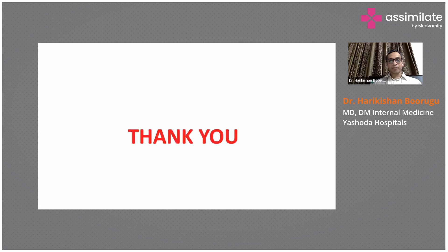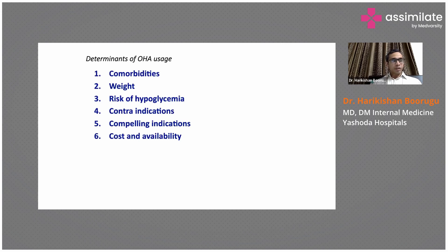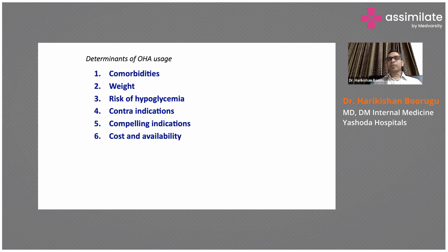It depends on the patient profile. For example, a 35-year-old newly diagnosed type 2 diabetes patient with a BMI of 29, normal creatinine, and no cardiac disease — my first choice would be metformin, as it is the first-line drug recommended by most scientific bodies. This patient is overweight, and metformin is weight neutral or may result in some weight loss.